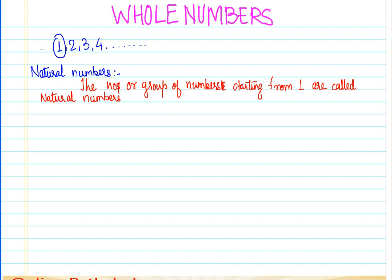Natural numbers are called 'natural' because it is very synonymous with — it matches very closely to — the way we count numbers. Now let us see a few properties of natural numbers. The natural numbers start from one, two, three, four, five, six, seven, eight, and so on.